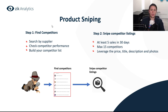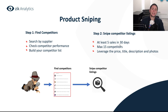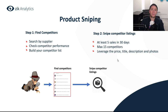Once you find a good seller, go to step two: snipe your competitor's listings. Pick products with the highest demand and lowest competition. The minimum criteria are at least five sales in the last 30 days and no more than 15 competitors. Do not list a product if you don't have leverage on the price, title, description, and photos — also shipping and return policies. Always look at the full picture; make sure you are better than your competitor in as many criteria as possible.